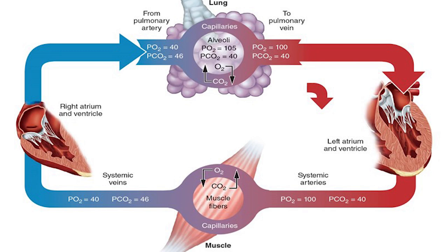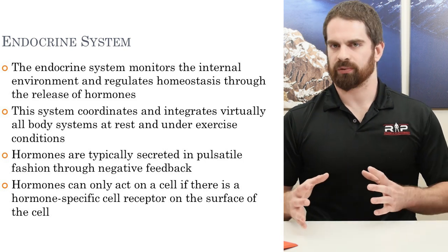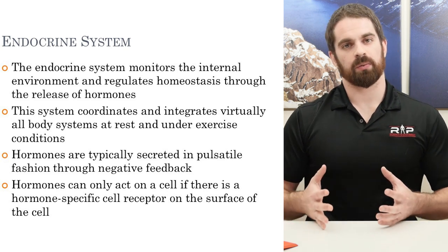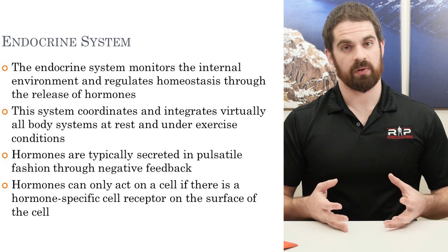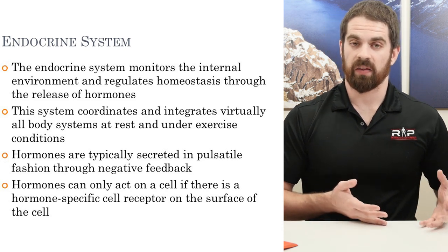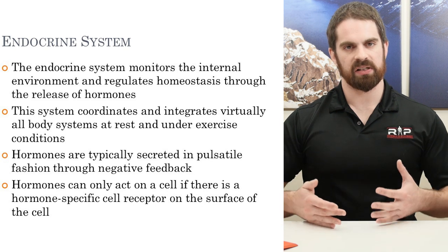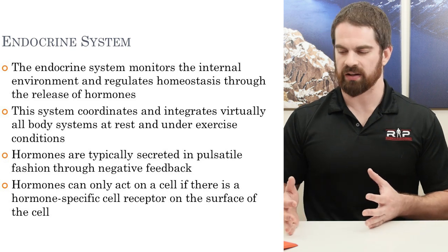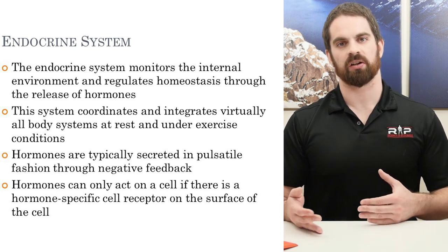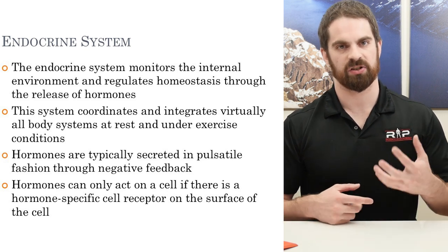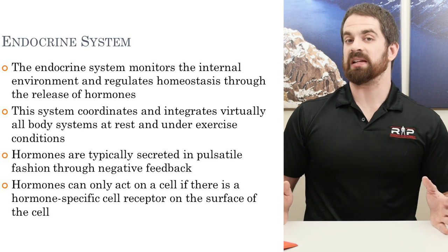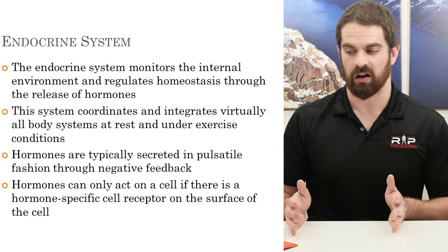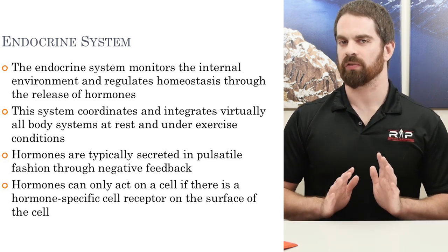The respiratory and cardiovascular systems play a huge role in regulating homeostasis at rest and during exercise. One of the other key systems is the endocrine system, which is one of the biggest internal monitors and regulators of homeostasis. It does that through the release of hormones — generally proteins that act on specific cells to do specific things. This is an expansive topic; we'll keep it relatively simple as you'll learn more throughout exercise physiology.